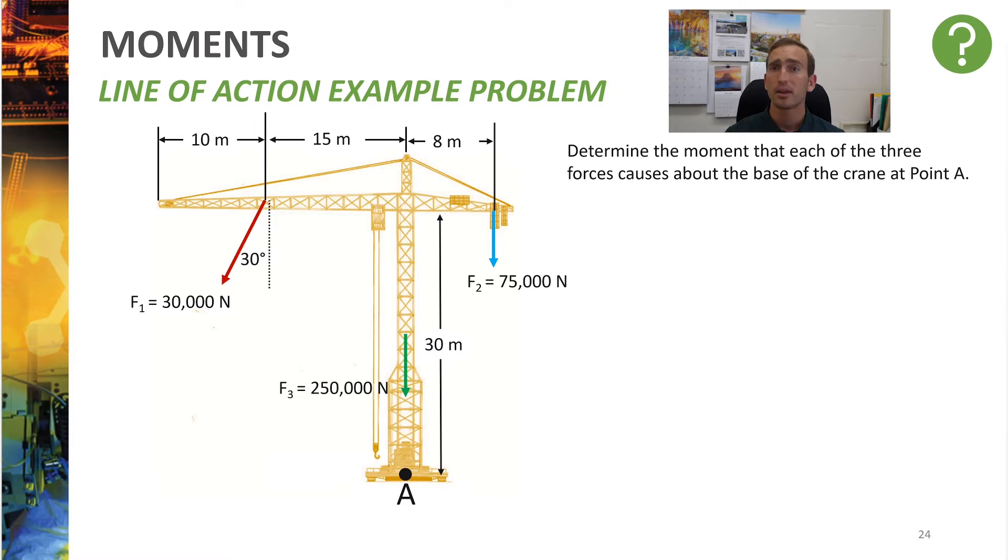Now, pause your video and think through for force F1, F2, and F3. Is it going to be easier to use the first method of F perpendicular times distance, or is it going to be easier to use line of action? I'll give you a hint. It's possible to use both simultaneously, and that may be helpful here. So pause your video and try and figure out the numerical value of the moment caused by each one of these forces about pivot point A at the bottom of the crane.